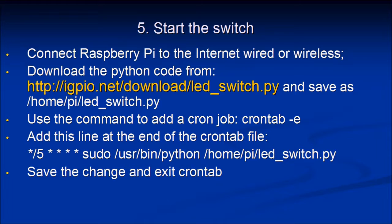Once you've built the switch and set up the website, you will start the switch — that is, turn the Raspberry Pi on. It needs to be connected to the internet, wired or wireless. You can then download some Python code from the IGPIO website and save that code to the home/pi directory. You should then use crontab -e to add a cron job, adding the line shown to schedule the program to run every five minutes, then save the change and exit crontab.